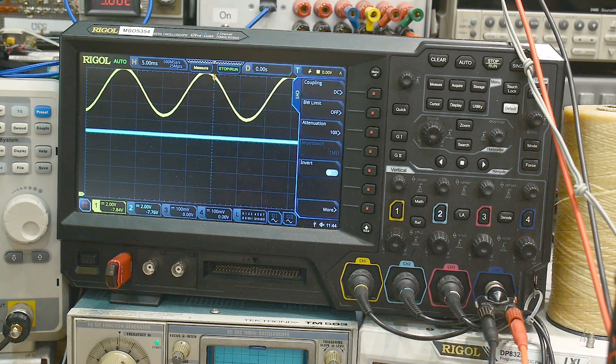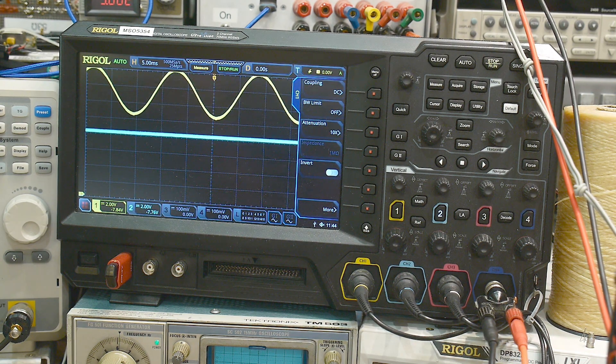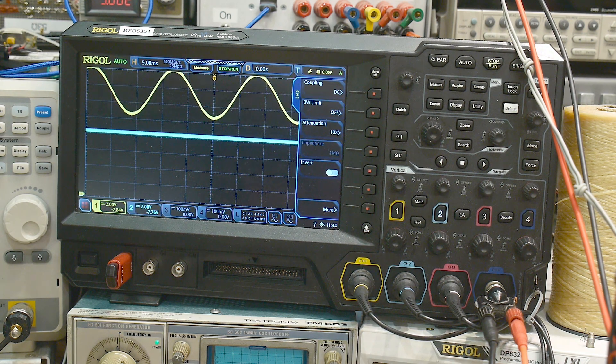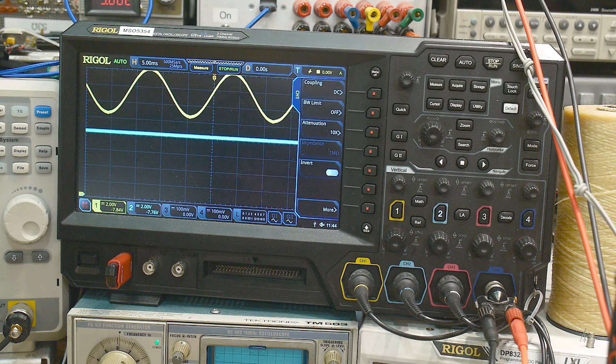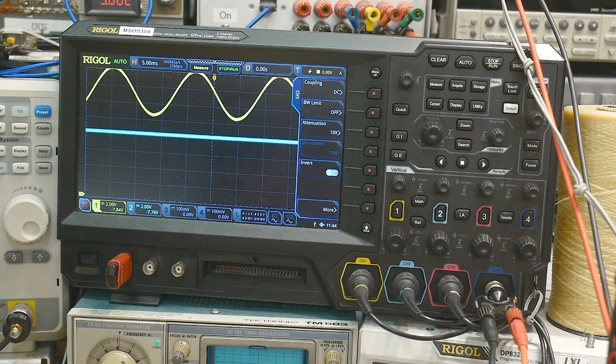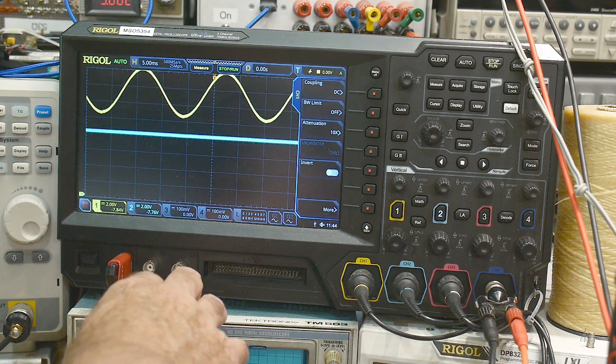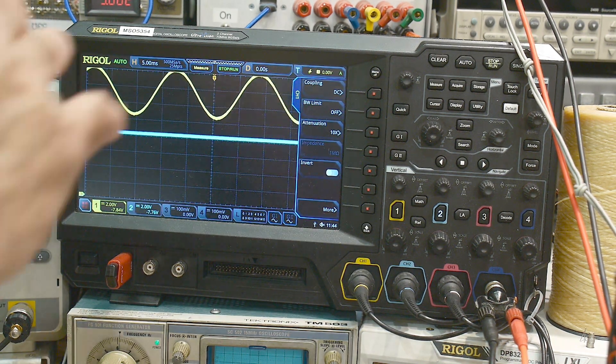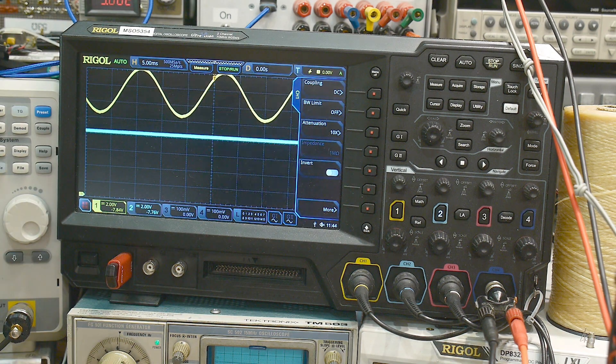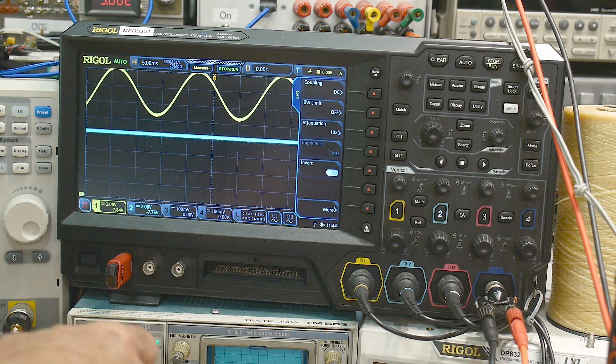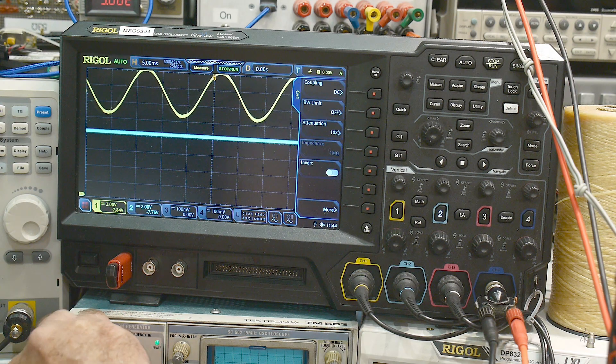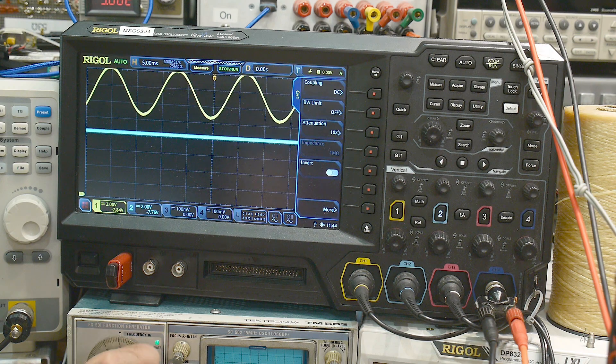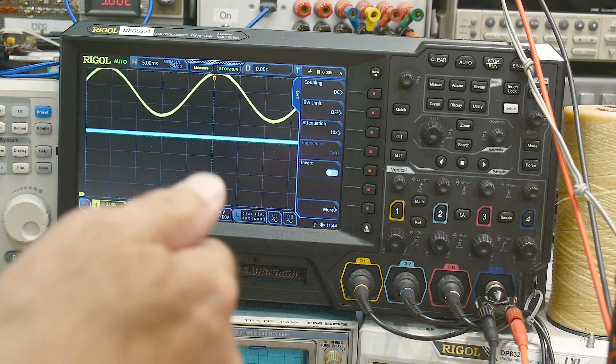Or I could actually program a file. So the arbitrary waveform generator allows you to create files and output those. And so I could create a synthesized ripple and have it at different levels and at different frequencies and stuff. One of the things we could do, we could change the frequency of the ripple.